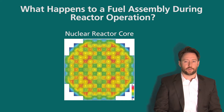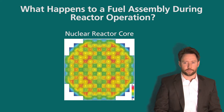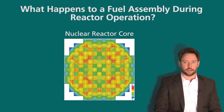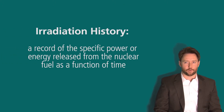The operational parameters we are going to discuss describe these different irradiation histories that a fuel assembly experiences. Irradiation history is a record of the specific power or energy released from nuclear fuel as a function of time.